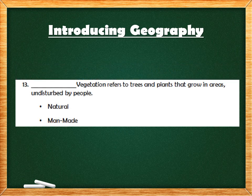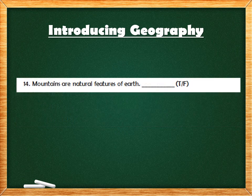Question 13: blank vegetation refers to trees and plants that grow in areas undisturbed by people. The options are natural or manmade. Since the question says undisturbed by people, it is not manmade — natural is the correct answer.